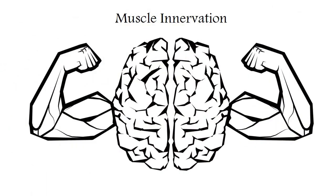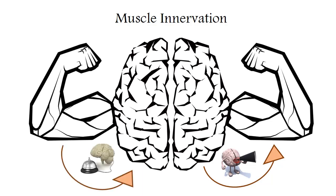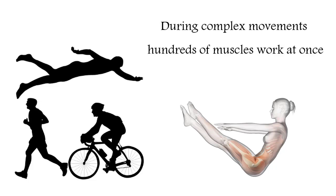Each muscle through the nerves is connected with the spinal cord or brain, and this connection is double. On the one hand, the muscles receive orders for execution from the CNS, and on the other they send a huge amount of impulses back to the CNS. This sensory innervation constantly informs the brain about the condition and position of the muscles. Any muscle affects movement in a particular joint, and during complex movements hundreds of different muscles cooperate simultaneously.